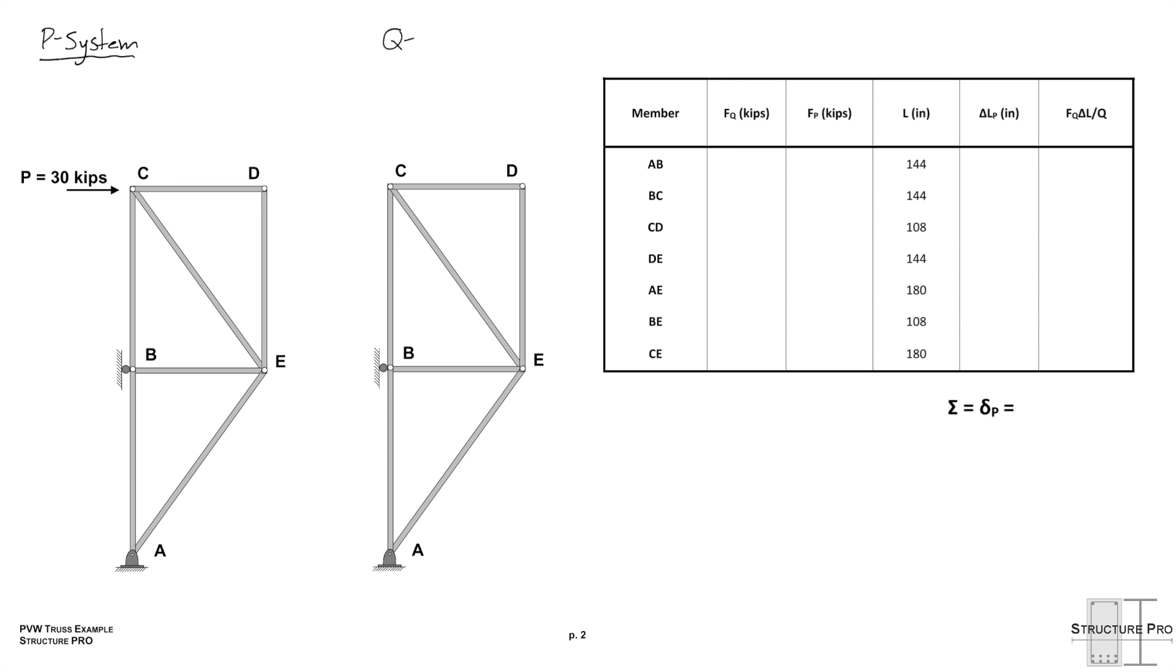Let's start here with our P system. We also have the Q system here. You'll notice I put Q equals 4 kips there. Don't worry about that, we'll get to that. Don't freak out that it's not 1 kip. Anyways, back to our P system.